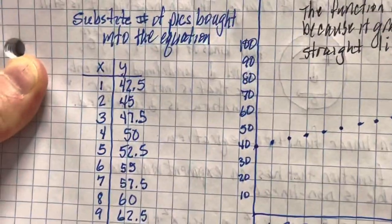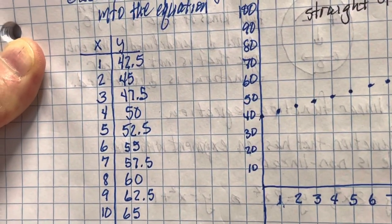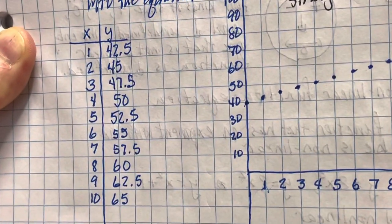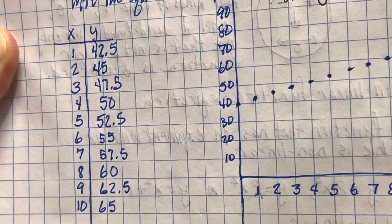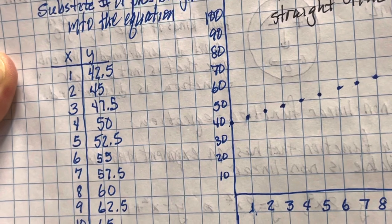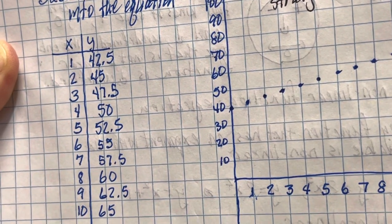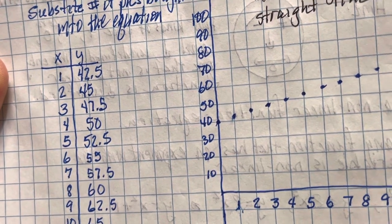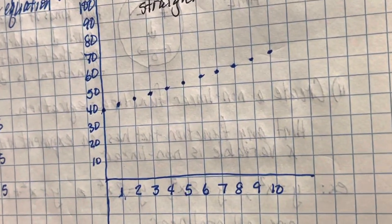For up to ten pictures, I substituted those values into the equation. For one picture it's $42.50, for two pictures it's $45, for three pictures it's $47.50, for four pictures it's $50, and so on. If you check each of those, the rate of change from one to the next will be $2.50.